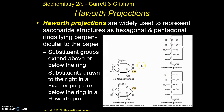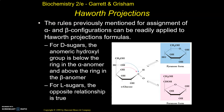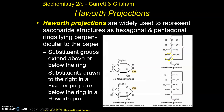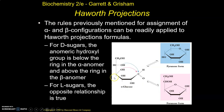So everything on the right is going to be pointed down, and everything on the left is going to be pointed up. How we compare this to alpha and beta configurations: if it's an alpha configuration, it's going to be on the right side — the same side as the oxygen — or pointed down. If it's a beta configuration, it's going to be on the opposite side as the oxygen, so it will be pointed up. All you really have to do is look at your projection and determine how the hydroxyl is pointed. In this case it's pointed up, and in this case it's also pointed up, so these are both beta.